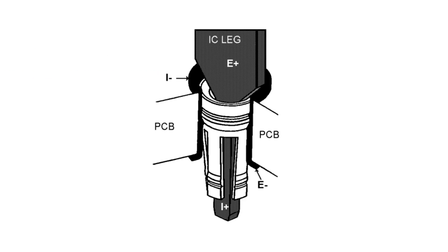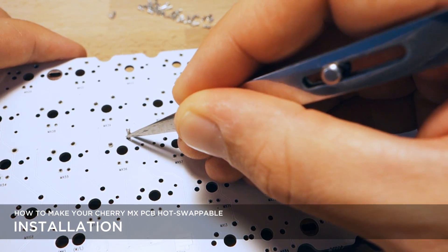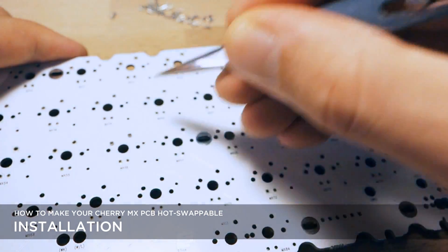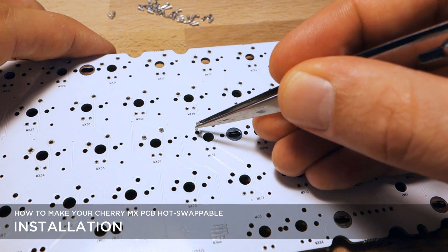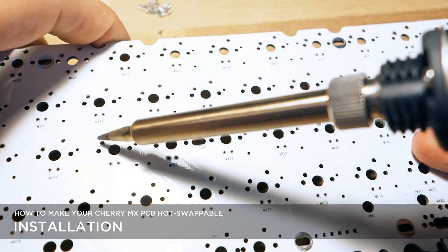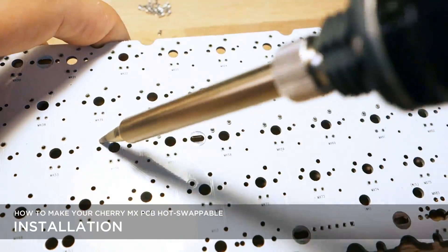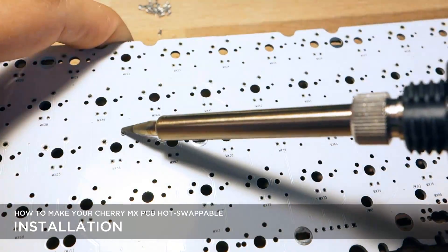Alright, let's see how I install them on my board. You take a pair of tweezers, pick the sockets up and put them into the slots for the switches just one by one. Then you take the soldering iron and you use a circular motion with some force applied to gently push them into the PCB.